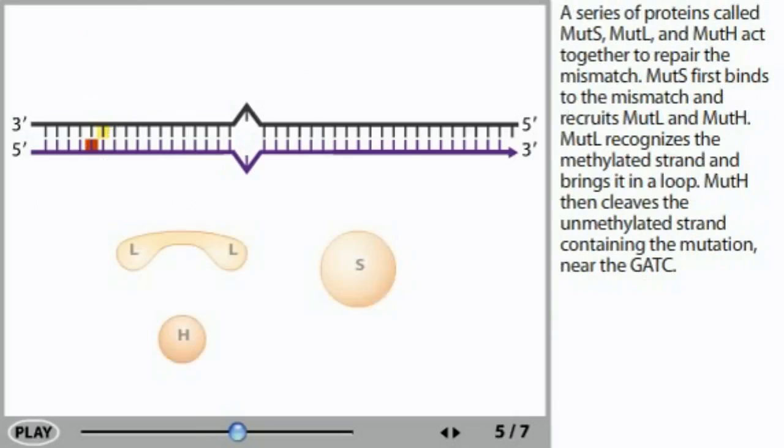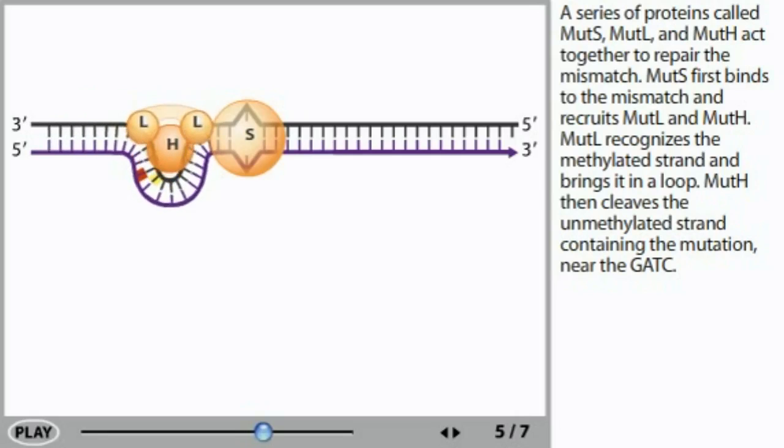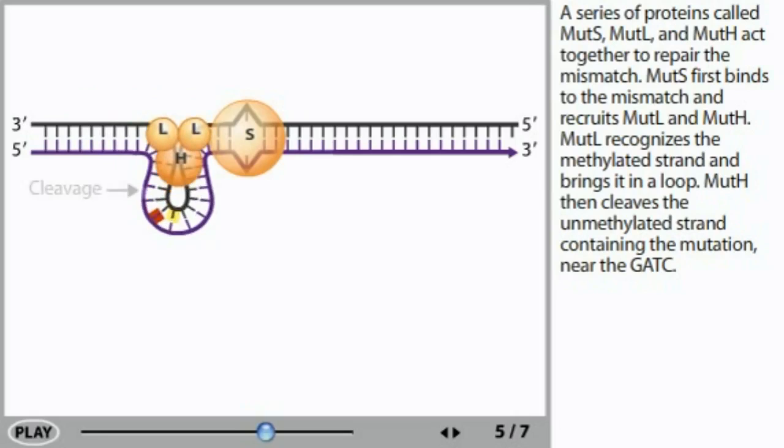A series of proteins called MutS, MutL, and MutH act together to repair the mismatch. MutS first binds to the mismatch and recruits MutL and MutH. MutL recognizes the methylated strand and brings it in a loop. MutH then cleaves the unmethylated strand containing the mutation near the GATC.